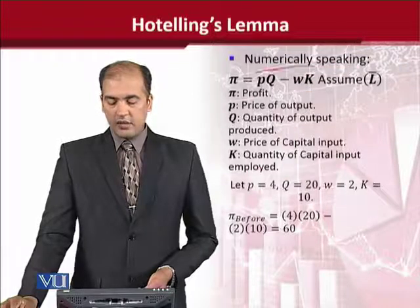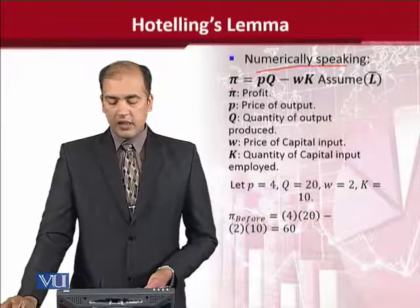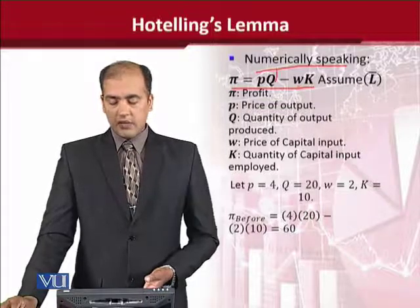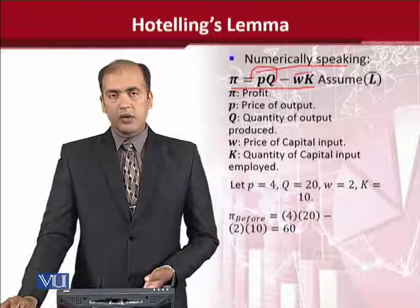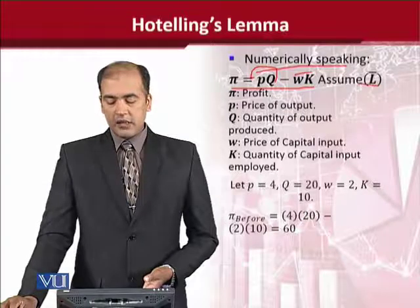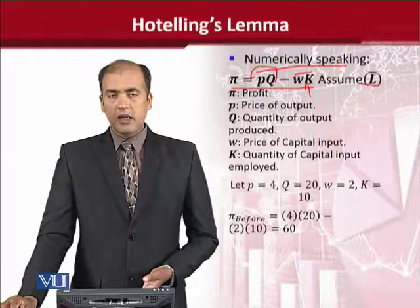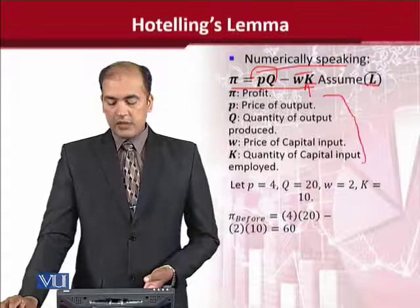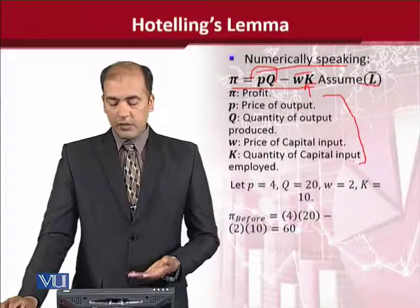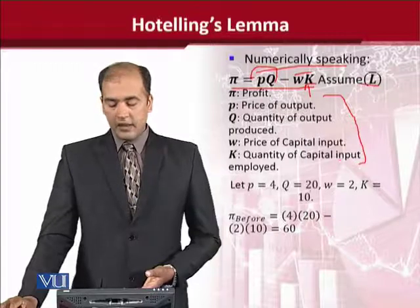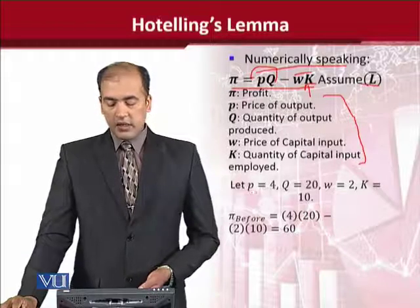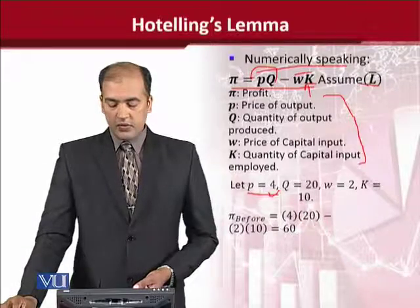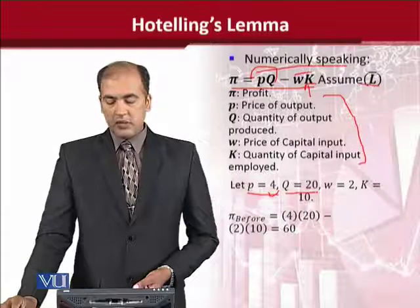Now, numerically speaking, let us consider an example. We are considering this profit function — this is the revenue and this is our cost. Since we have kept labor silent, only capital is visible to us. These notations are explained, which you can easily understand by reading. After explaining the notations, we assumed numerical values: price is equal to 4 and output is equal to 20.